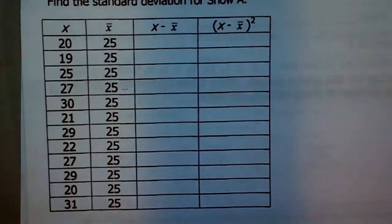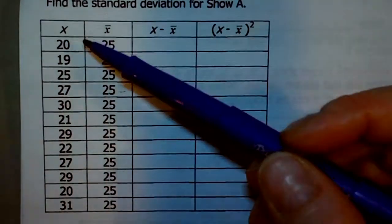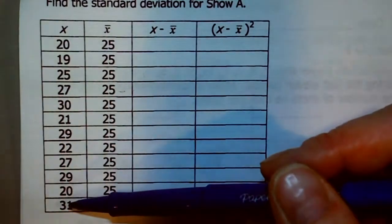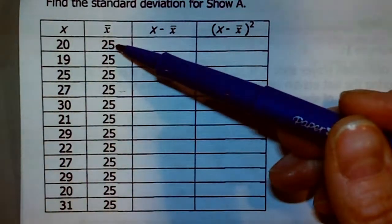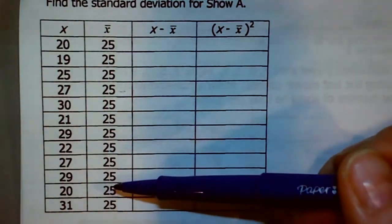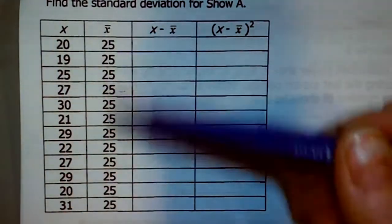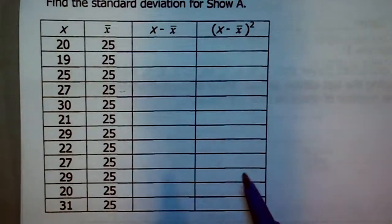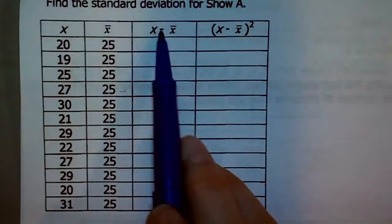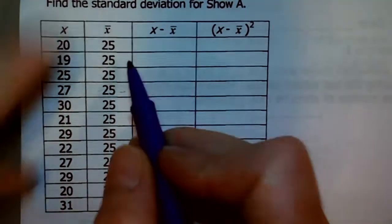This asks you to find the standard deviation for Show A. I went ahead and listed all of the ages from the data table for Show A, and listed the mean of 25. In the future you'll have to do that yourself on a homework assignment. So you'll list out all the data values and x-bar, the mean. Now we're going to subtract the original data value and the mean.